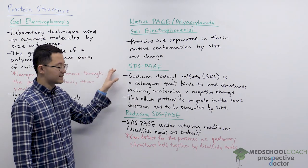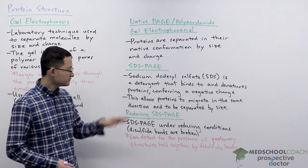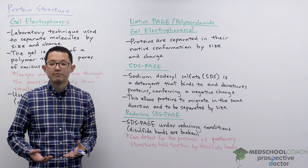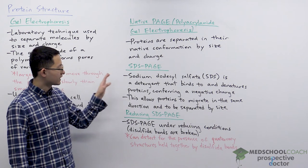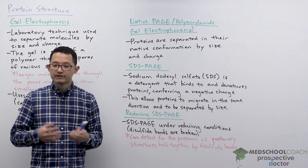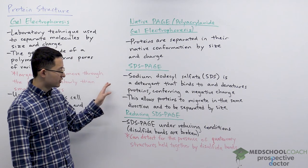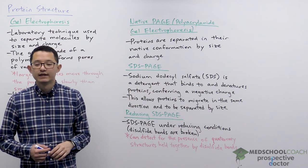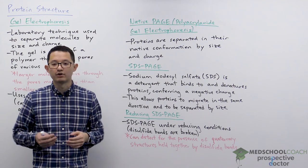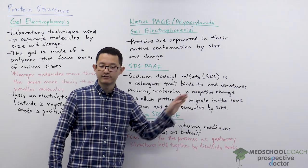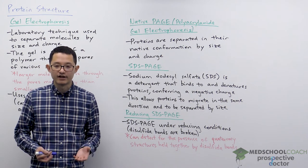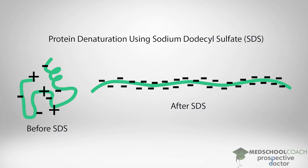Because of those multiple factors, native PAGE is not used as often as SDS PAGE and reducing SDS PAGE. In SDS PAGE, you run gel electrophoresis but the proteins have been exposed to a chemical agent called sodium dodecyl sulfate, or SDS. Looking at this diagram you can see the structure of SDS — it is a detergent, meaning it is an amphipathic molecule with one nonpolar side and one polar side with charges. SDS binds to and denatures the protein, surrounding it with SDS molecules, and you can see that initially the protein is folded with some positive and some negative charges.